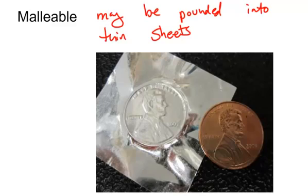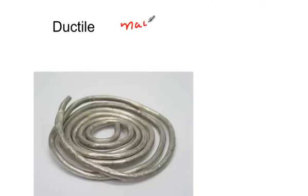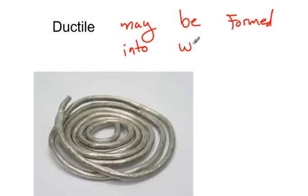We can also talk about metals being ductile. So ductile means may be formed into wire. And think of all the wire that you've seen in your house—it's always metal.